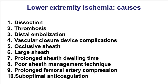What causes lower-extremity ischemia? There are several ways the arteries can be compromised, including dissection, thrombosis, and distal embolization — the latter also being part of the cholesterol embolization syndrome. Sometimes, use of vascular closure devices can lead to vessel occlusion and ischemic complications. Also, if the sheaths are large and occlude flow to the limb, ischemia can happen — this is especially true for large-size sheaths, for example when mechanical circulatory support devices are used. Ischemia can also happen because of prolonged sheath-dwell time, poor technique with long femoral artery compressions, and suboptimal anticoagulation during long procedures.